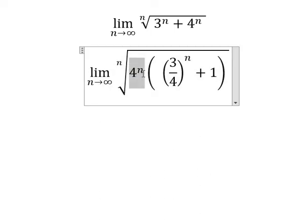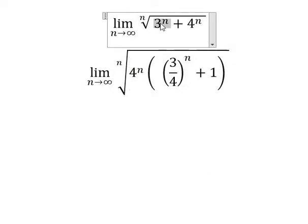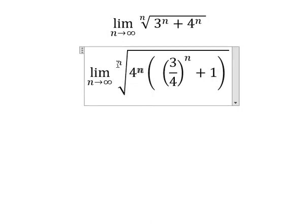Because this one multiplied by this one we have 3 to the power of n. So we have the power of n and we have n root, so I will put this one outside and we have number 4.